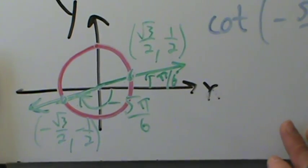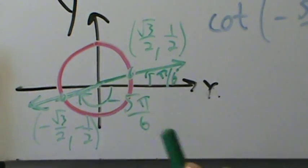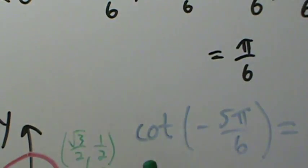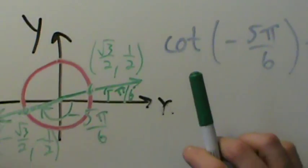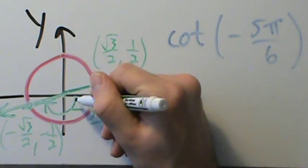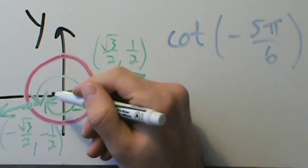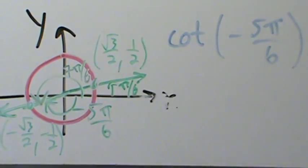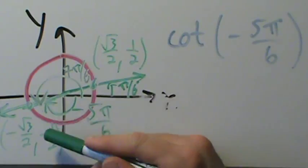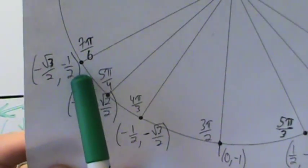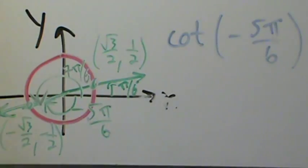Yet another approach: negative 5π over 6 is coterminal with 7π over 6, because adding 2π — one full revolution — lands you at 7π over 6. Then we can compute cotangent of 7π over 6 by taking x-coordinate divided by y-coordinate directly.